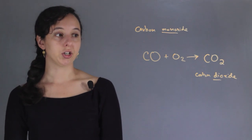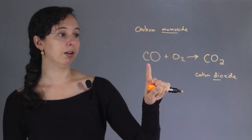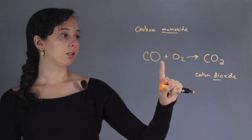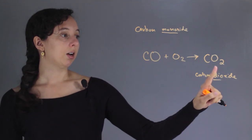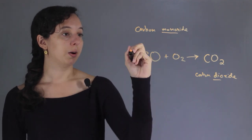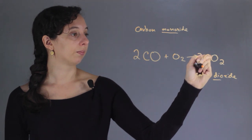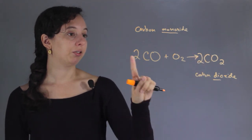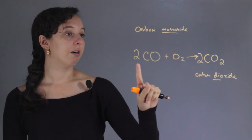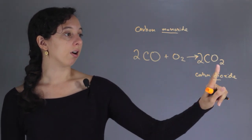And now we have to balance the equation. Starting here we have one carbon, one carbon — that works. But over here we have three oxygens and only two over here, so we're going to have to bump this number up to two. Now we have two carbons, two carbons — that works. And now we have four oxygens here and four oxygens here.